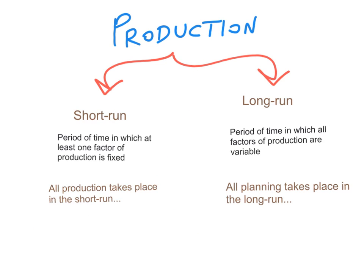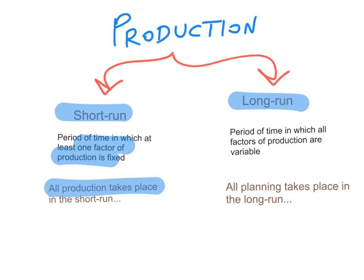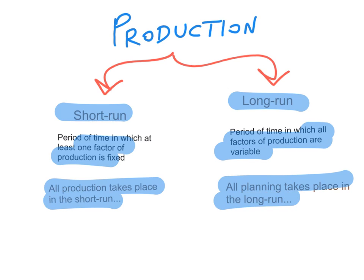This brings us to the distinction between the short run and the long run. In the short run, at least one factor of production is fixed. All production takes place in the short run. In the long run, all factors of production are variable, and all planning takes place in the long run. Let's focus more on production in the short run.